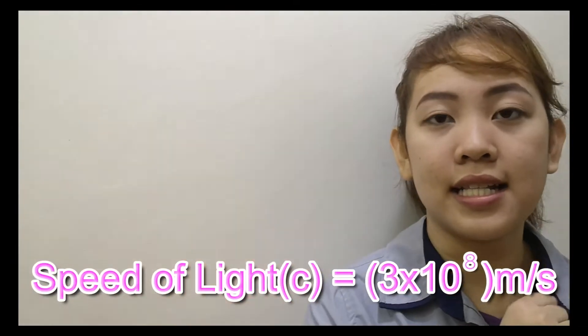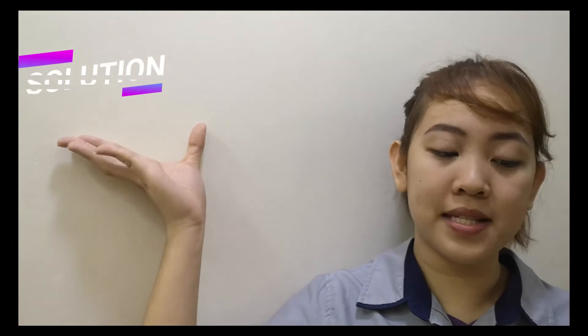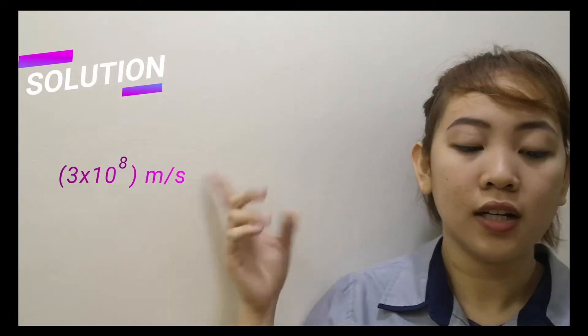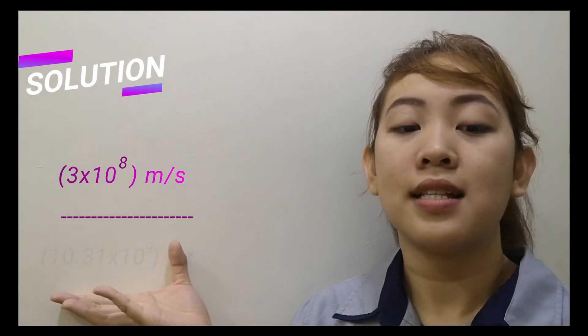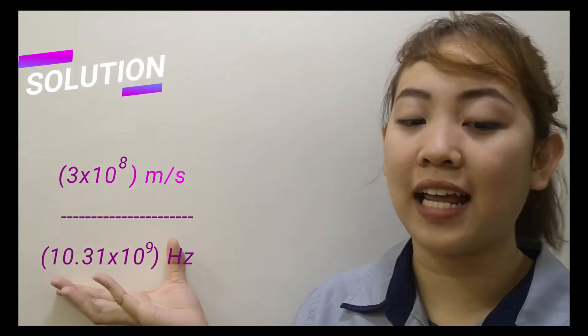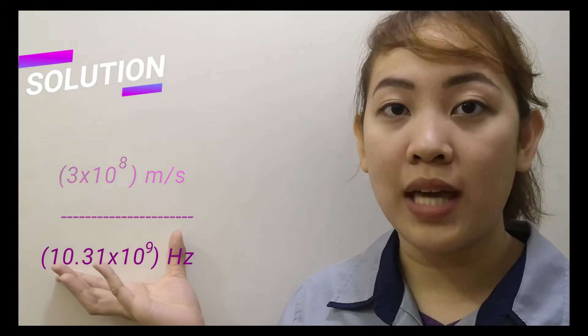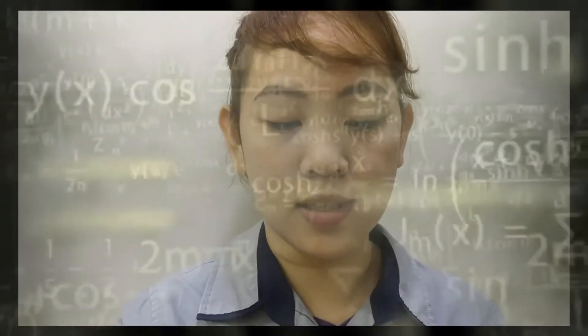So, let us find the wavelength of a 10.31 GHz signal. To do that, again, what is the speed of light? That is 3 times 10 raised to 8 meters per second. So that would be 3 times 10 raised to 8 meters per second over 10.31 times 10 raised to 9 hertz. Because we have GHz, we have to convert it into hertz. And according to our scientific calculator, we will arrive at 0.02909796314 meters.